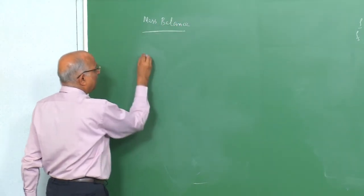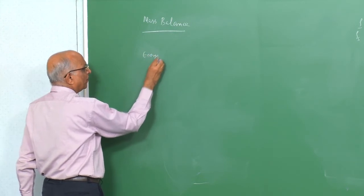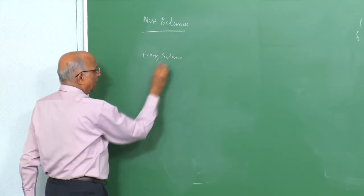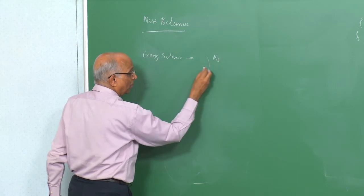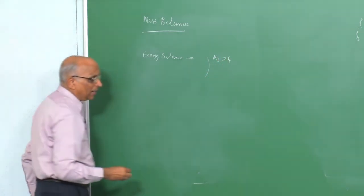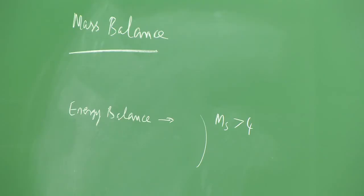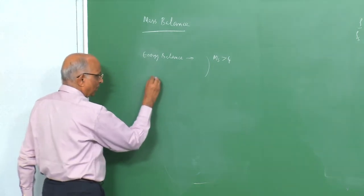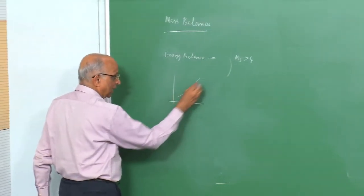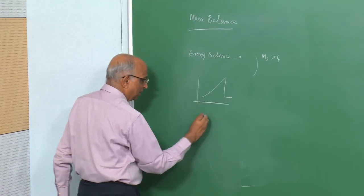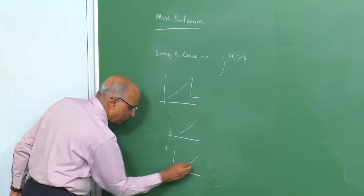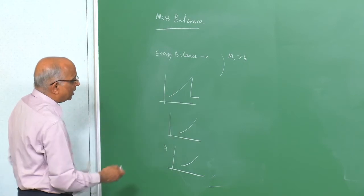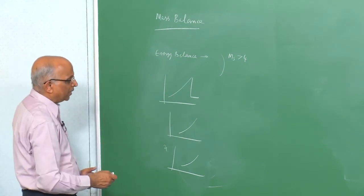Therefore, a strong blast wave is one in which the mass processed by the blast wave is more or less contained at the blast wave front itself. That was from mass balance. Let us now try to look at the energy balance to see whether we can draw any other information.